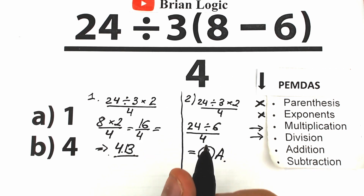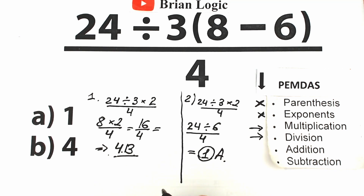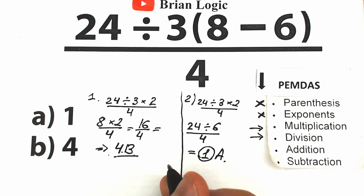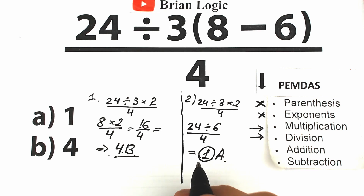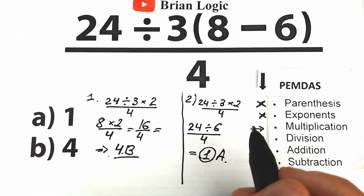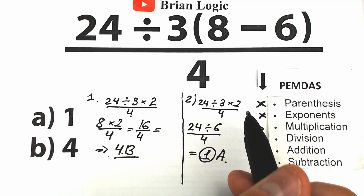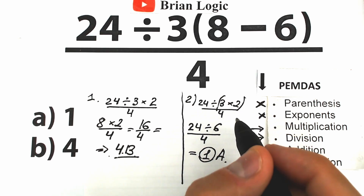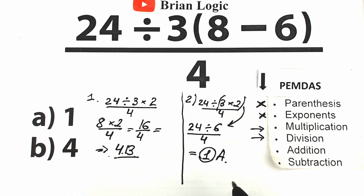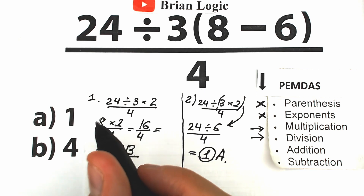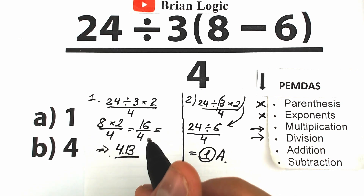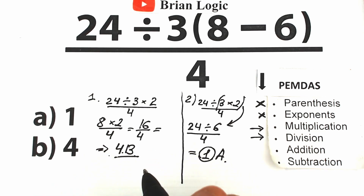So we have option B giving 4, and option A giving 1. But we need one correct answer. The key point is: in the second interpretation, where we divide 24 by the whole entire product 3 times 2 — in math, you can't just jump around. If you want to divide by the whole product, you need to add parentheses. Without those parentheses, we have a regular expression and must go left to right: 24 divided by 3 times 2 gives 8 times 2 equals 16. The correct answer is option B.